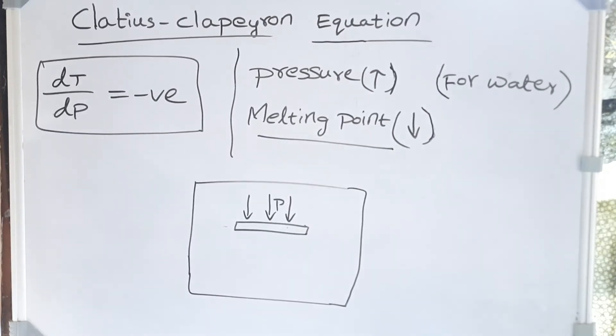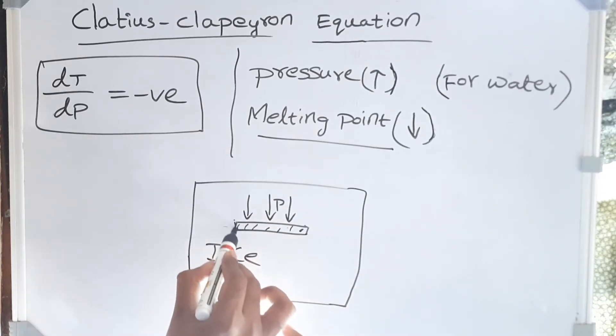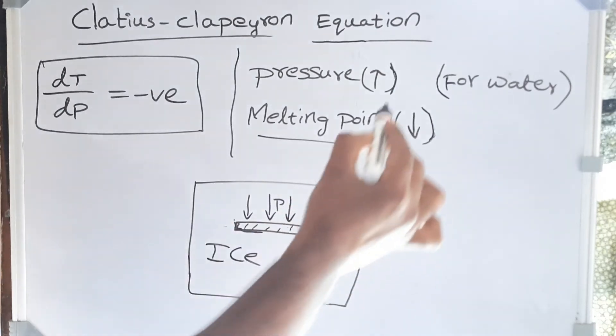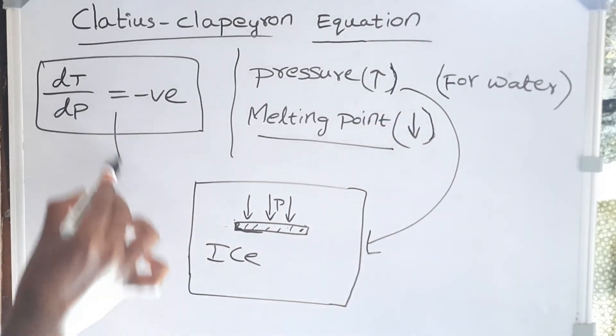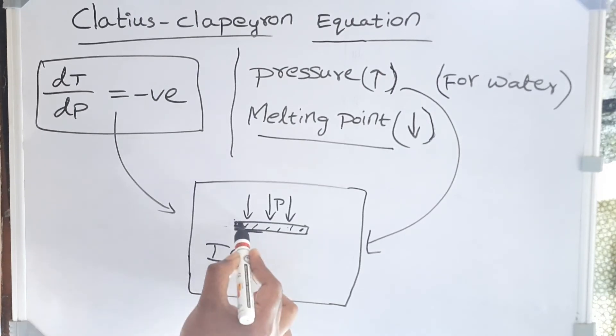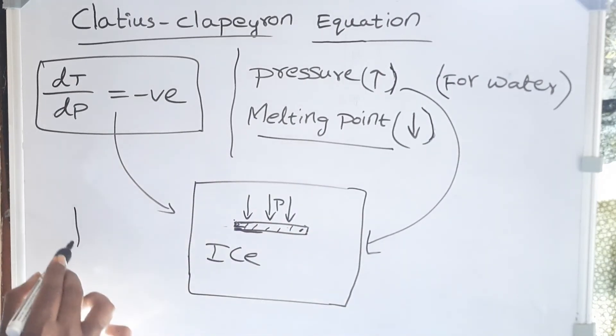Here because of the body weight of the person, the pressure in this small area increases. And because it is ice, pressure of this small area is increasing, so melting point in this particular area drops according to the Clausius-Clapeyron equation.